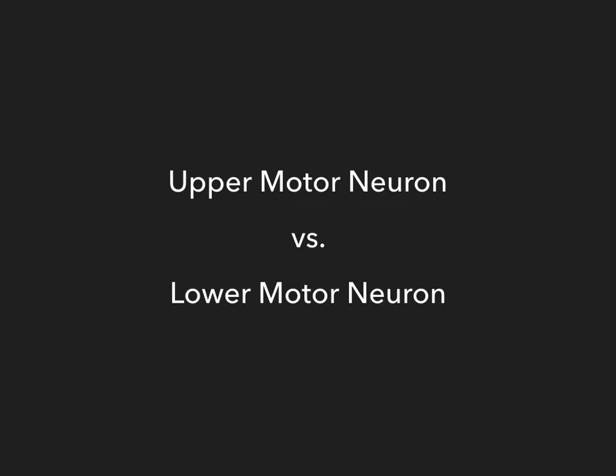This is very high yield for Step 1. It shows up literally all the time — it's in every QBank and is very well documented in the literature. There's nothing unknown about upper motor neuron lesions versus lower motor neuron lesions, which makes it high yield because a lot of neurology is complex and confusing, but this is perhaps more straightforward. My plan is to teach you the basic science and then give you the mnemonic for recalling and interpreting a UMN versus an LMN lesion.